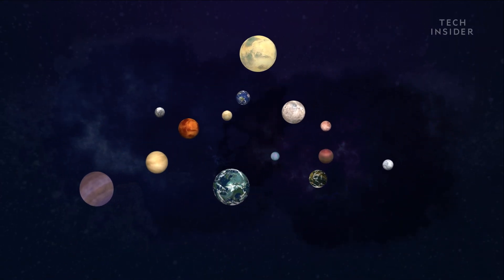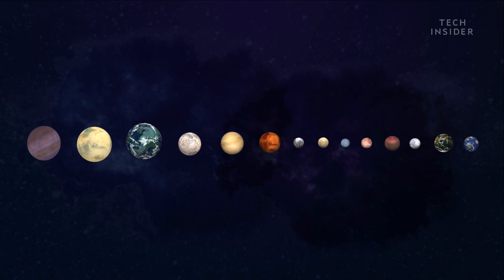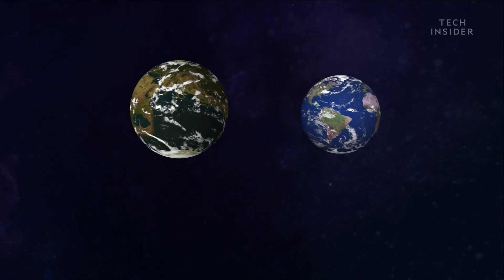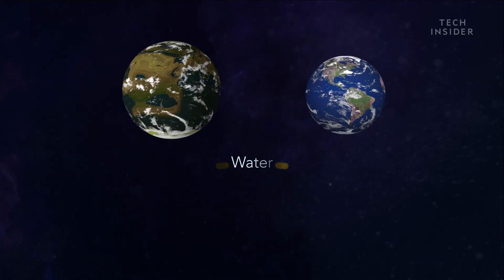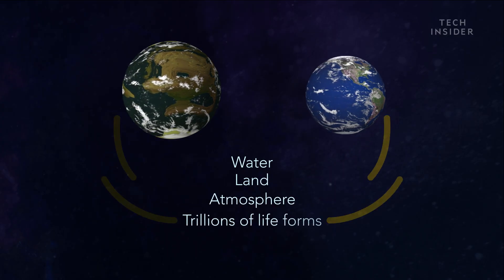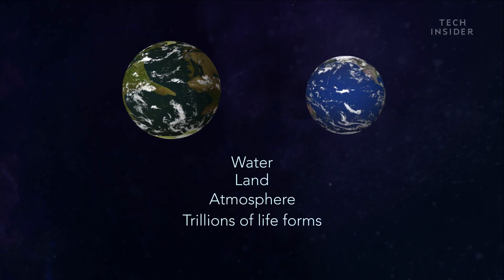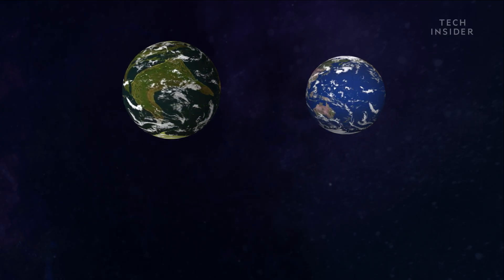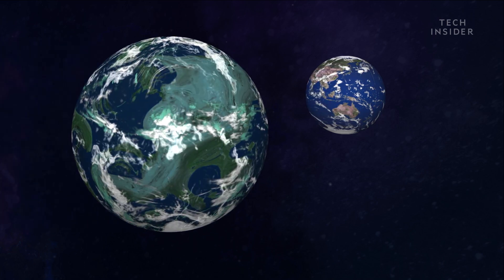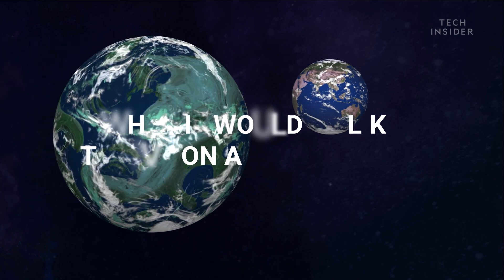You might think that most Earth-like planets should be at the top of our list. After all, we've got everything we need—water, land, an atmosphere, and trillions of lifeforms lapping it all up. But according to a small group of researchers, there are bigger and better planets out there. They're called super-Earths.